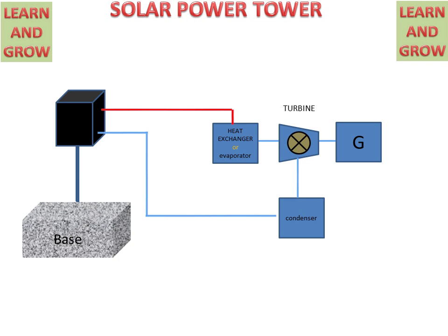Then this heated steam will go to the turbine. The turbine will start rotating. This rotation converts mechanical energy into electrical energy with the help of the generator.